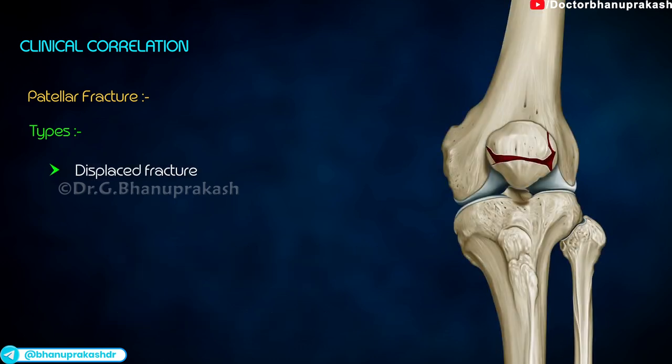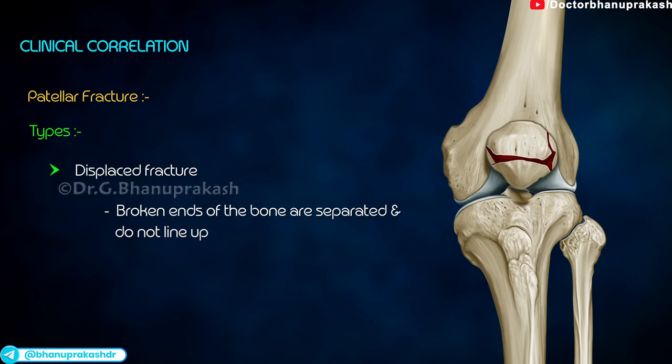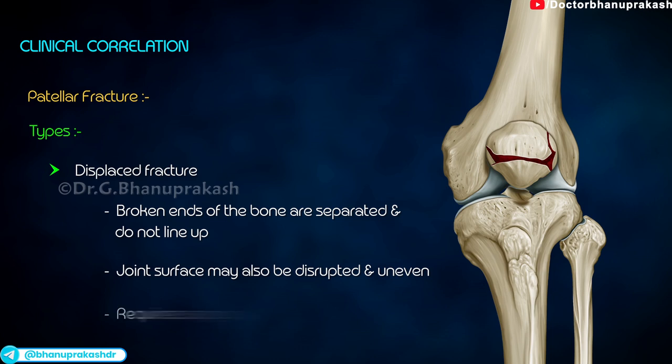Displaced fracture. The broken ends of the bone are separated and do not line up. The joint surface may also be disrupted and uneven. It often requires surgery to put the pieces of bone back together in place.